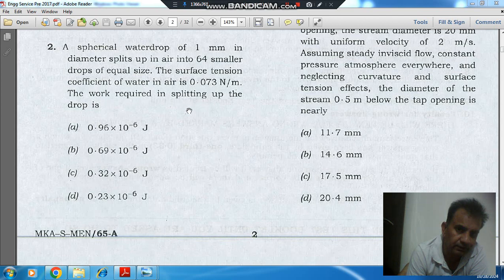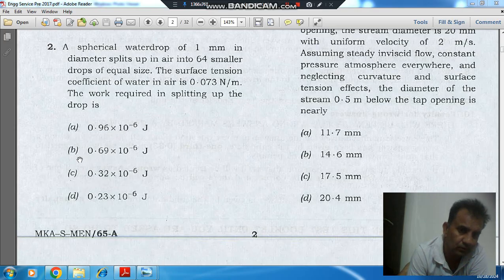The work required in splitting up the drop is: Option A, 0.96×10⁻⁵ J; Option B, 0.69×10⁻⁵ J; Option C, 0.32×10⁻⁵ J; Option D, 0.23×10⁻⁵ J.